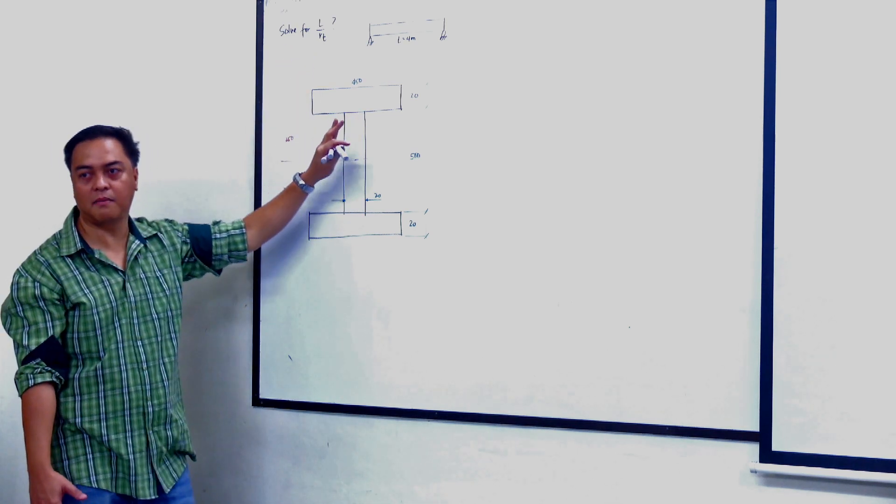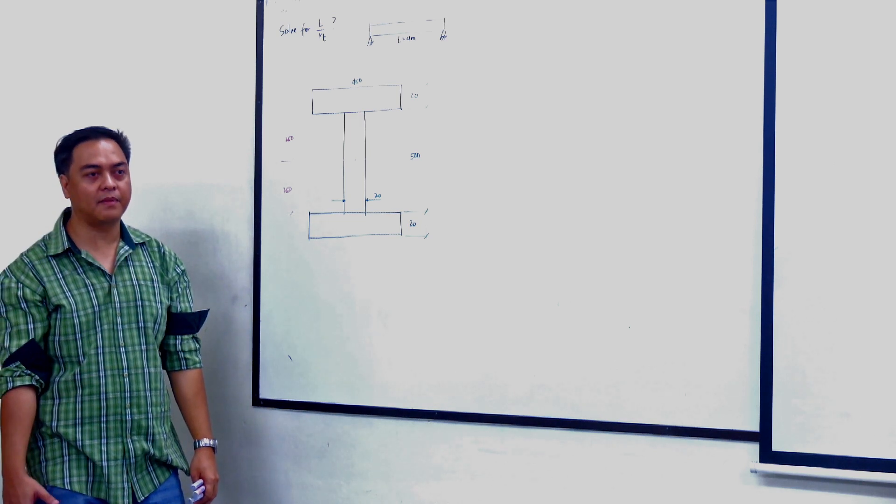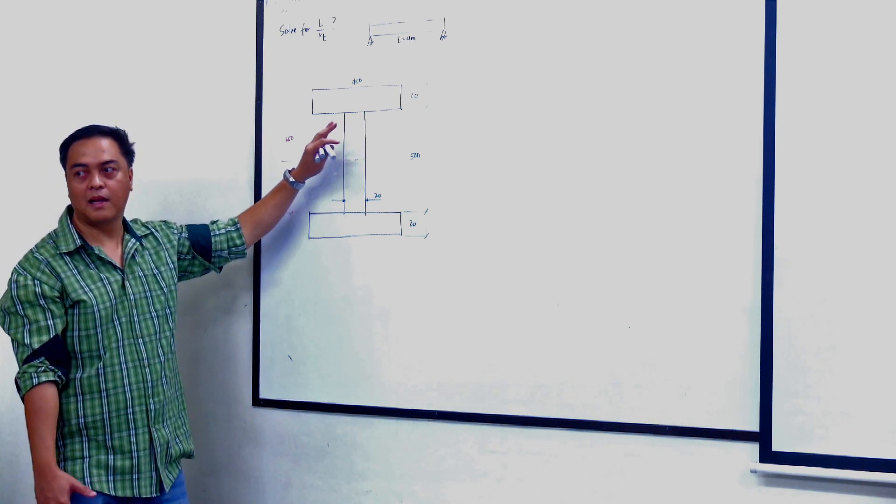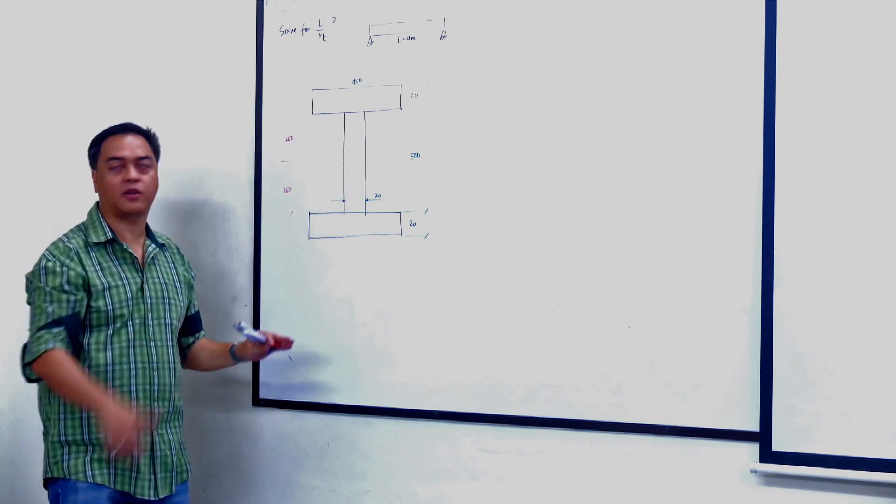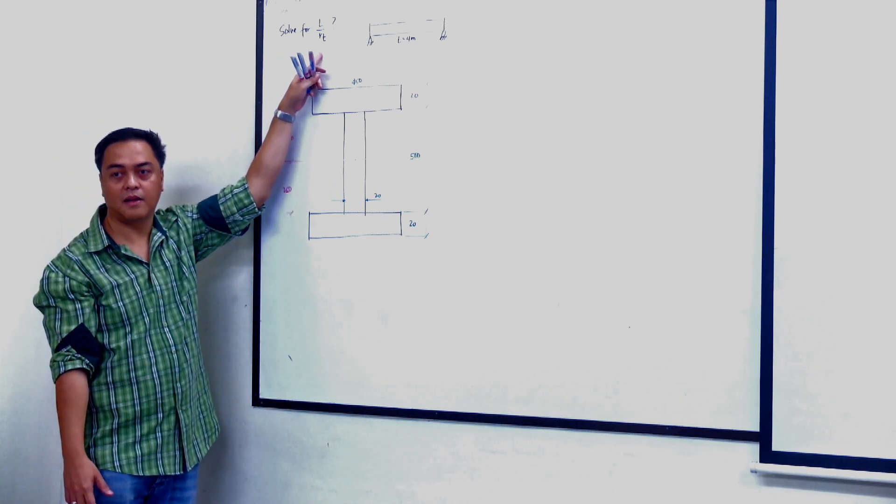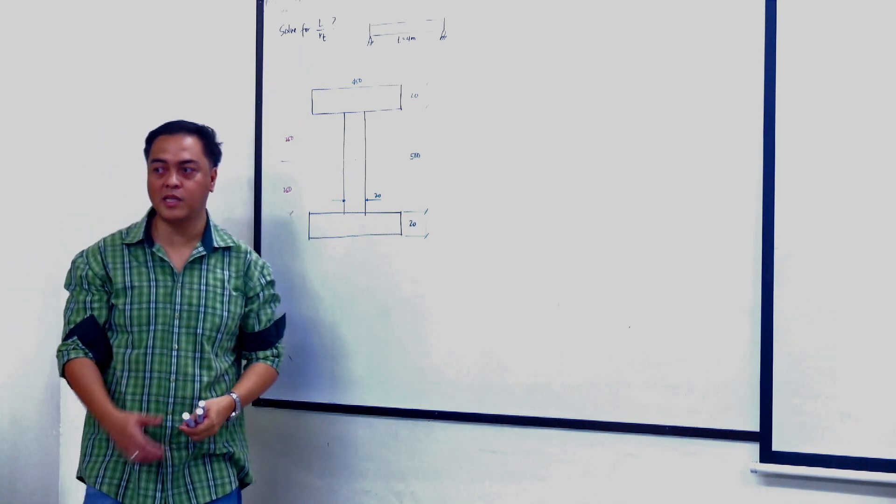If a section is standard, like a wide flange section found in the steel manual, we can find the R sub D property. The R sub D can be found from the steel manual for standard sections.